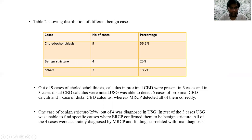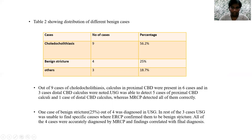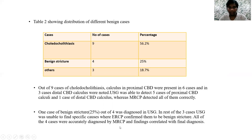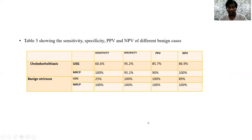One case of benign stricture out of 4 was diagnosed on USG. In the remaining 3 cases, USG was unable to find specific causes, where ERCP confirmed them as benign strictures. All 4 cases were accurately diagnosed by MRCP and correlated with the final diagnosis.